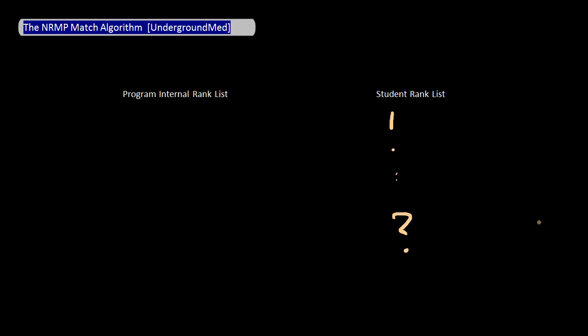The algorithm first. I'm not going to show you step-by-step down to the last detail how it works. Instead, I'm going to make some simplifications so that I get the big principles and important points across. Each of us — the students — interview at a bunch of programs and then rank those programs by preference from number one to whatever. Similarly, a program interviews a bunch of students and ranks them in some order of their liking from one to whatever.